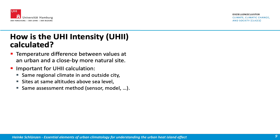You might want to know how the heat island is calculated. It's the temperature difference between values of an urban and a close-by, more natural site. This sounds very easy, but it's not, because you have to make sure that you have the same regional climate in and outside the city — for example, having the same distance from water bodies, because of local circulations that might take place. Sites also have to have the same altitude above sea level, because temperature decreases with height. If you have temperature values at different heights, you will get a temperature difference, but it will be the result of height differences and not so much of the urban effect. And you have to use the same assessment method, meaning the same sensor or the same model.